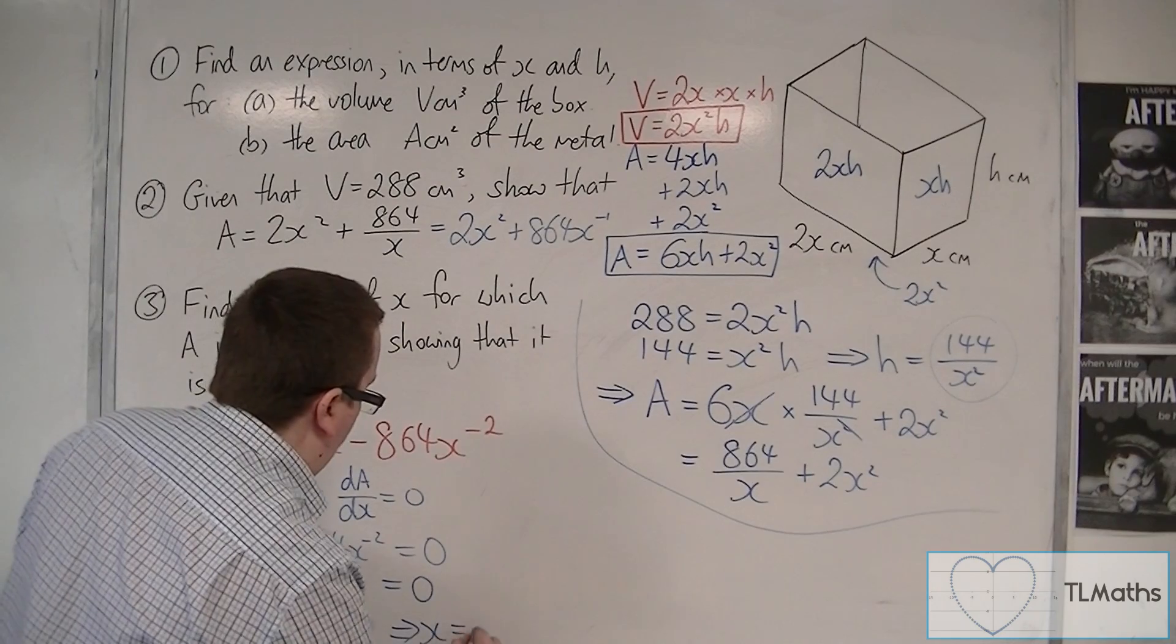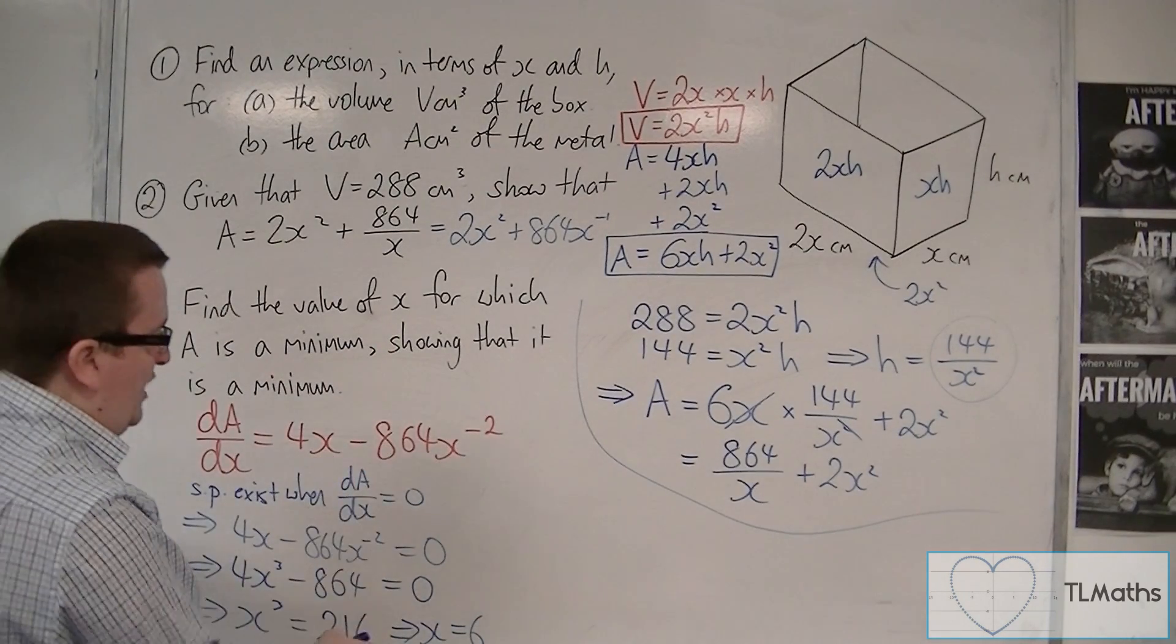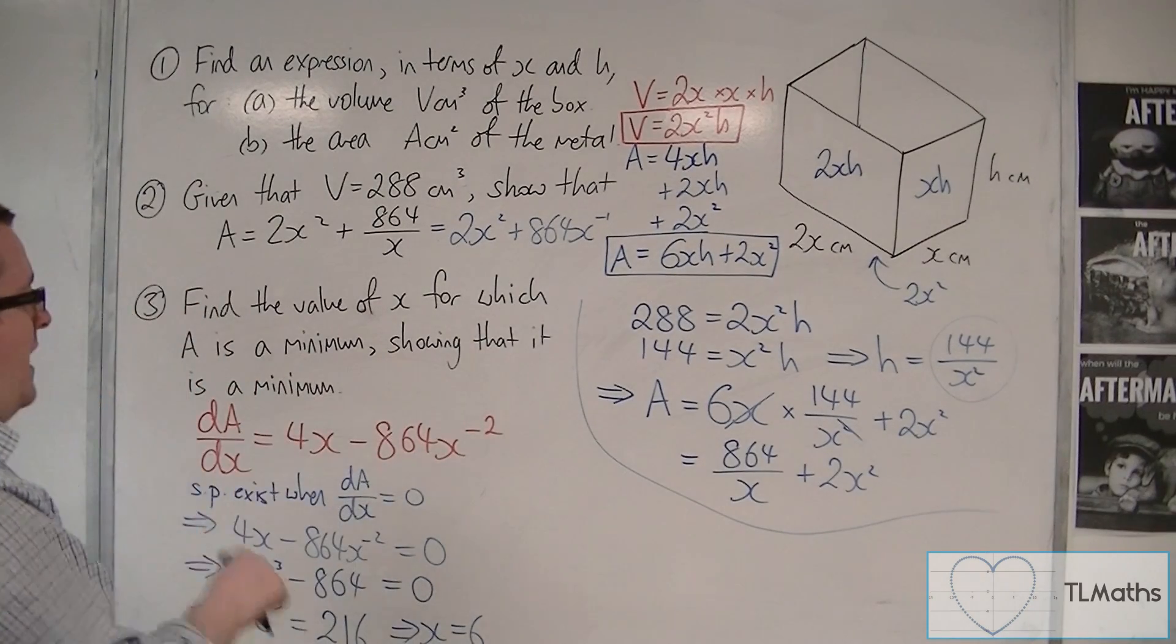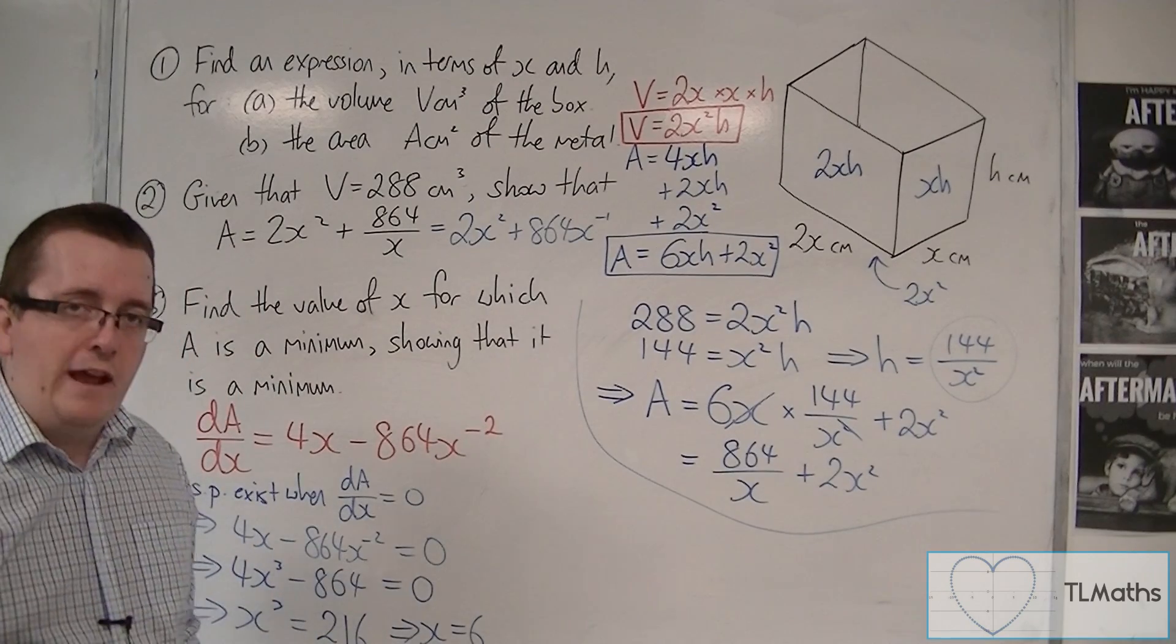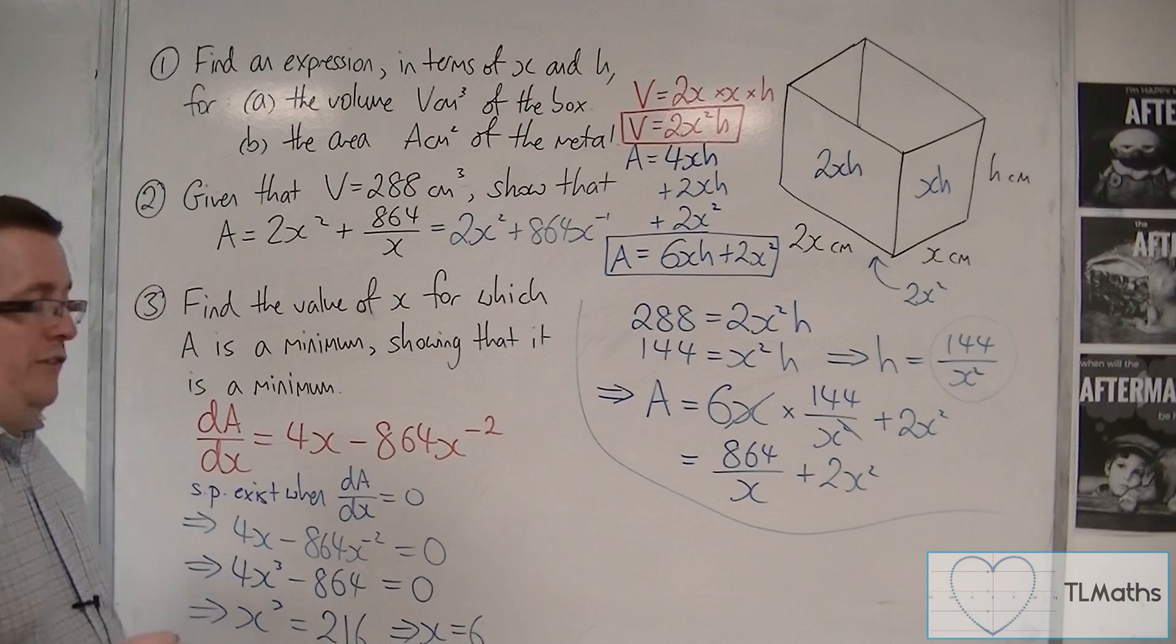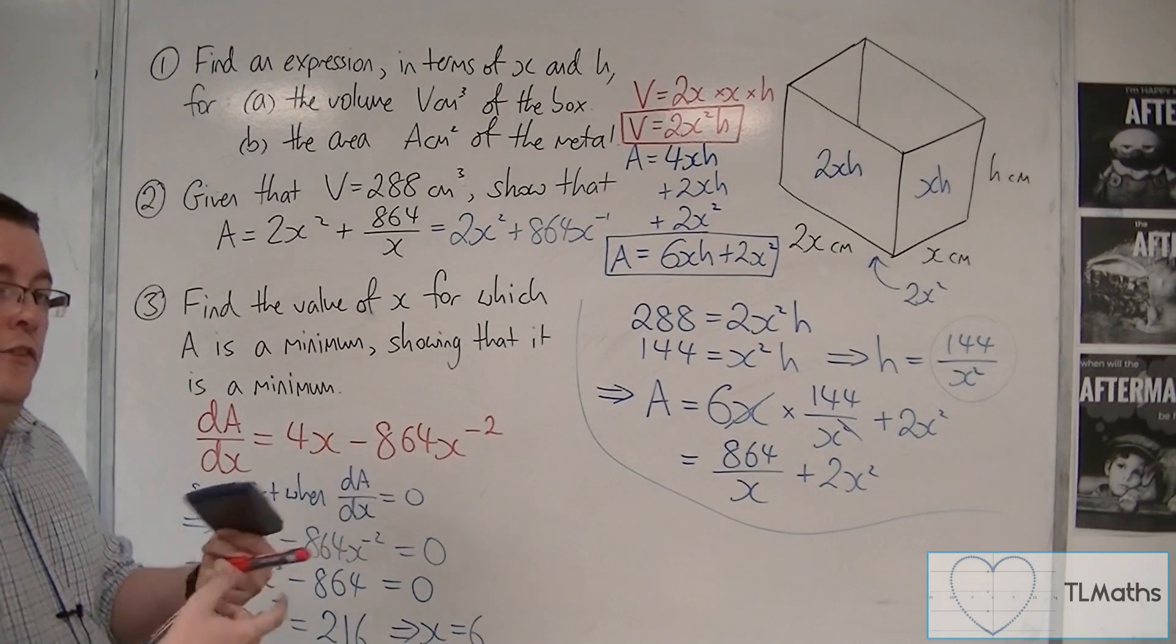So, x must be 6. And so, that is the stationary point, the only stationary point that there is. And so, that must be what gives me my minimum value of the area, of the sheet metal. But I need to show that it's a minimum.